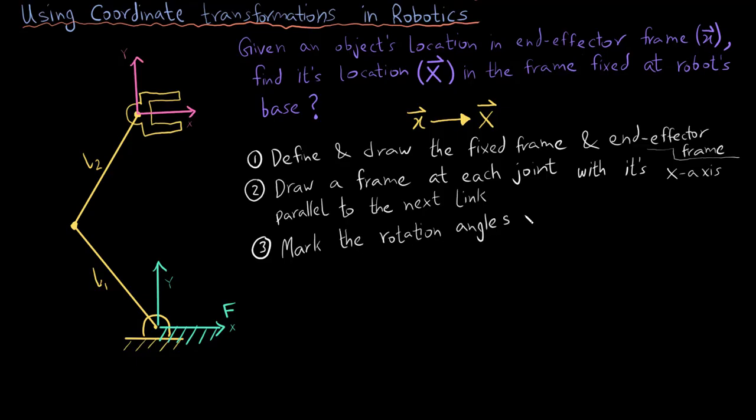There are two things that you need to consider. First, all the rotation angles have to be in an anti-clockwise direction since anti-clockwise is positive. Second, the rotation angle is going to be with respect to the previous frame. I have already drawn the fixed frame and the end effector frame, so the first step is done.